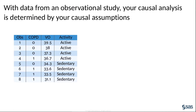Suppose you have been asked to examine the causal link between chronic obstructive pulmonary disease and exercise capacity as measured by the maximum rate of oxygen consumption during exercise, or VO2max. To answer this question, you have a data set that includes an indicator for COPD diagnosis, measured VO2max, and self-reported physical activity level. Of course, these data could not have been collected as part of a randomized experiment because it does not make sense to consider randomly assigning an individual to have COPD.